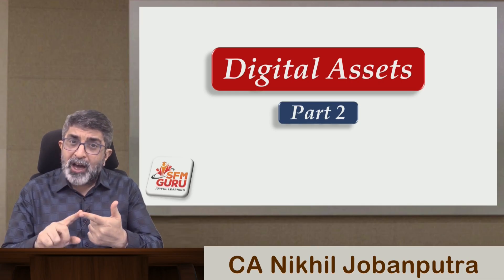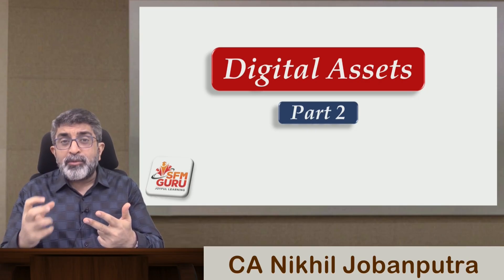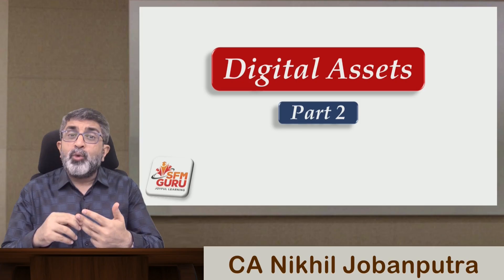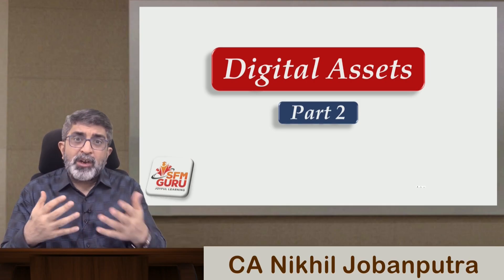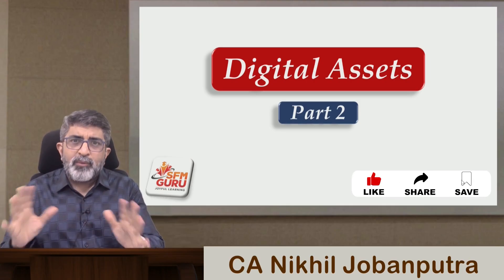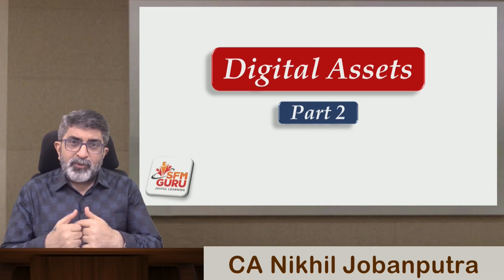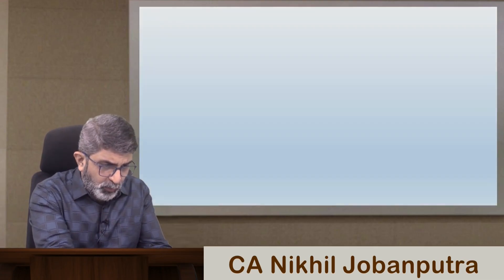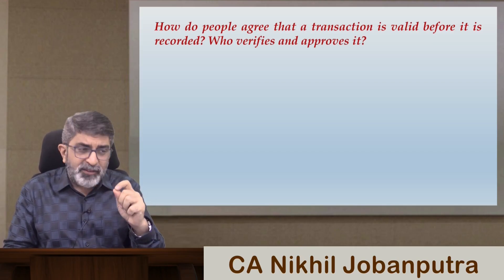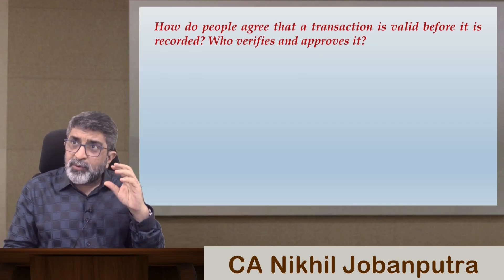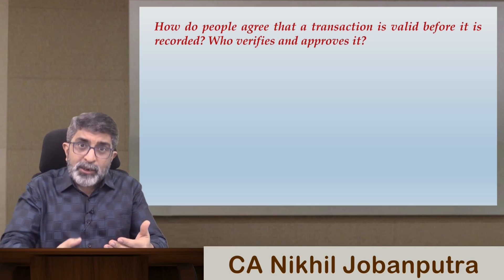In Part 1 we primarily discussed: what are digital assets, what is DLT (distributed ledger technology) also known as blockchain, how does a blockchain work, and the prerequisites of a blockchain. At the later part, we came to the question of how do people agree that a transaction is valid before it is recorded into the blockchain.